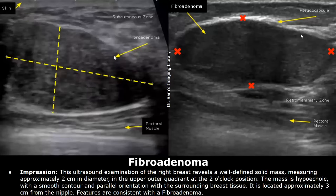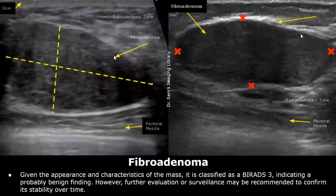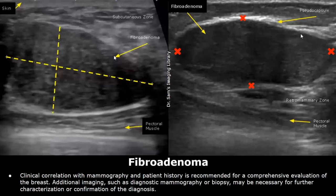You can write the findings in the impression as well as the location of the mass and its distance from the nipple, and then you can write that features are consistent with fibroadenoma. The BIRADS score is 3 in this case, indicating a probably benign finding. However, further evaluation or surveillance may be recommended to confirm its stability over time. You can end the impression by writing about clinical correlation and advising additional imaging, such as mammography or biopsy, which may be necessary for further characterization or confirmation of the diagnosis.